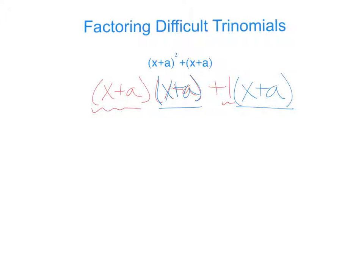So what we're going to do is we're going to factor out the x plus a that we're seeing in both of these. So we're taking that out first. And then what we have left is an x plus a from here and this 1. And that's our result. That's our answer.